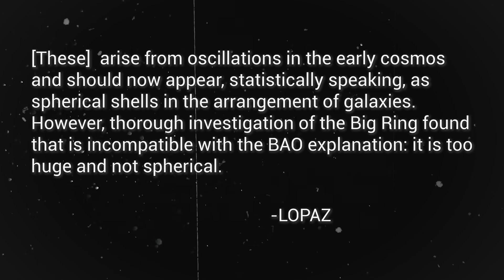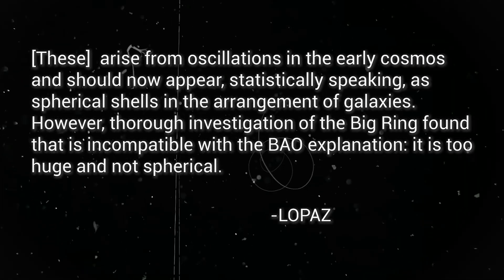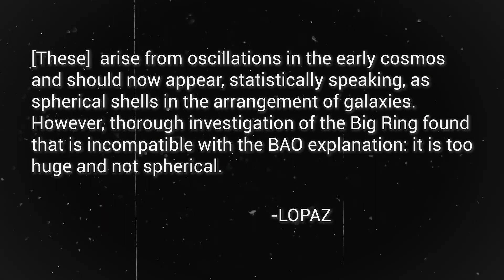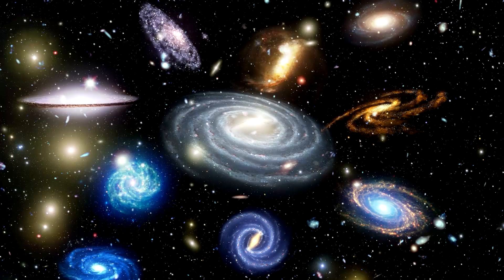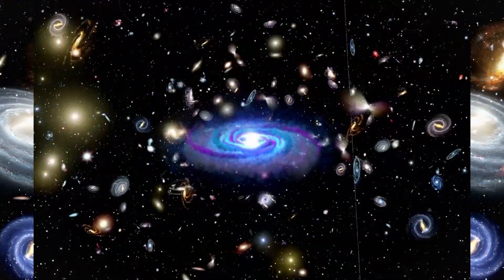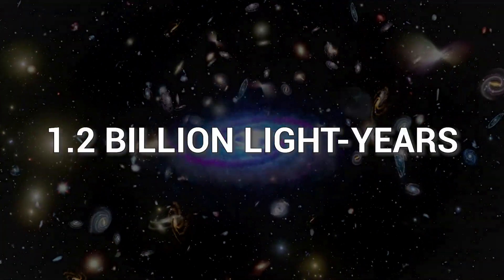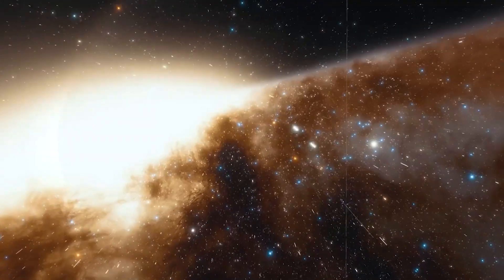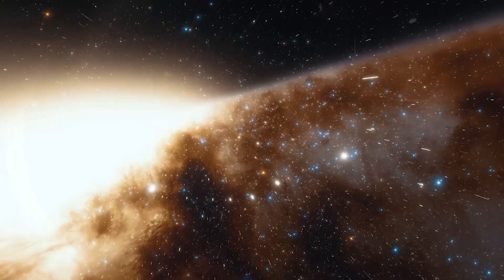However, thorough investigation of the Big Ring found that it is incompatible with the BAO explanation. It is too huge and not spherical. According to cosmological theory, the greatest structures that BAOs may create, such as chains of galaxies and galaxy clusters, would be no more than 1.2 billion light-years long. However, the circumference of the Big Ring and the length of the Giant Arc outweigh this constraint.